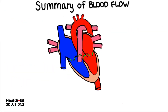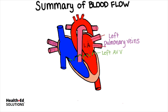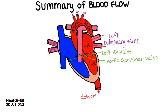To conclude this video, let's describe blood flow through the heart one more time together. Oxygenated blood passes through the left pulmonary veins and the right pulmonary veins into the left atrium. Blood passes through the left AV valve into the left ventricle. When the ventricles pump, oxygenated blood is forced upward and through the aortic semilunar valve into the aorta and the aortic arch, delivering oxygen-rich blood to all the body organs.